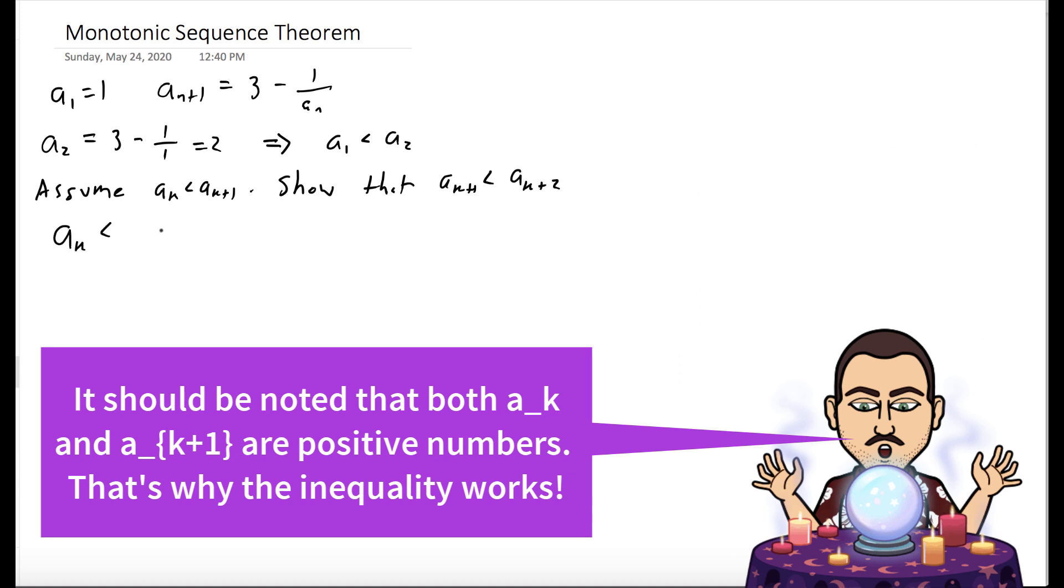So if a_k is less than a_{k+1}, now what we want to do is manipulate this until we get to the form of a_{k+1} is less than a_{k+2}. So we'll multiply both sides of the inequality by negative 1, and notice that flips the inequality. And then we'll take 1 over each side, so that flips the inequality again. So we have negative 1 over a_k is less than negative 1 over a_{k+1}.